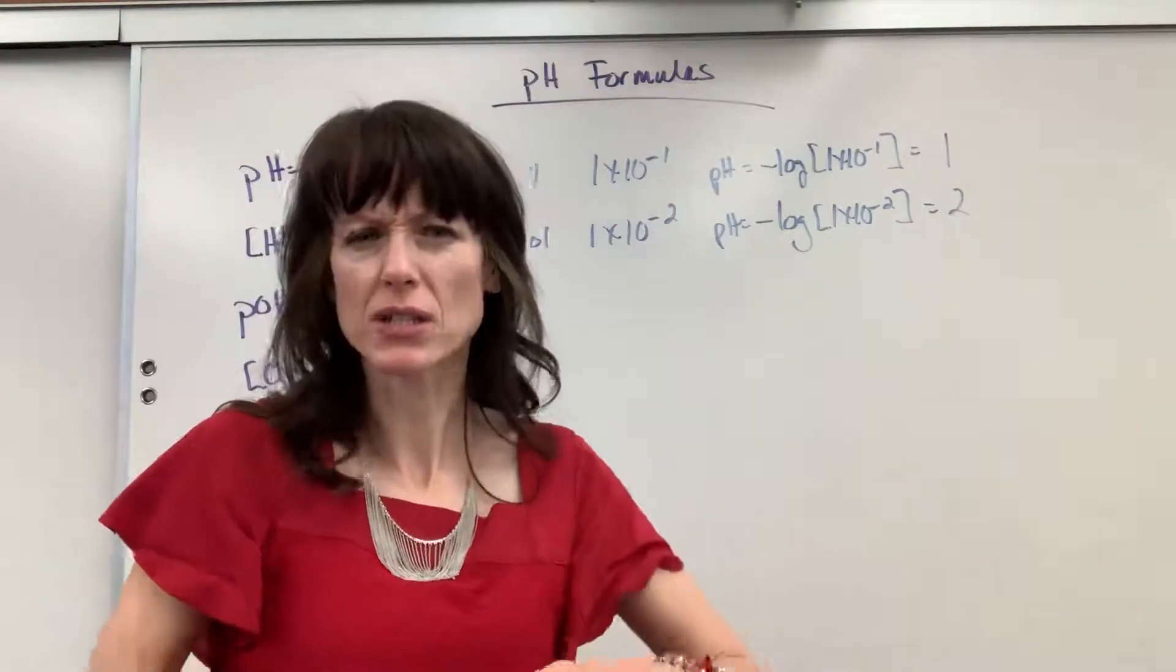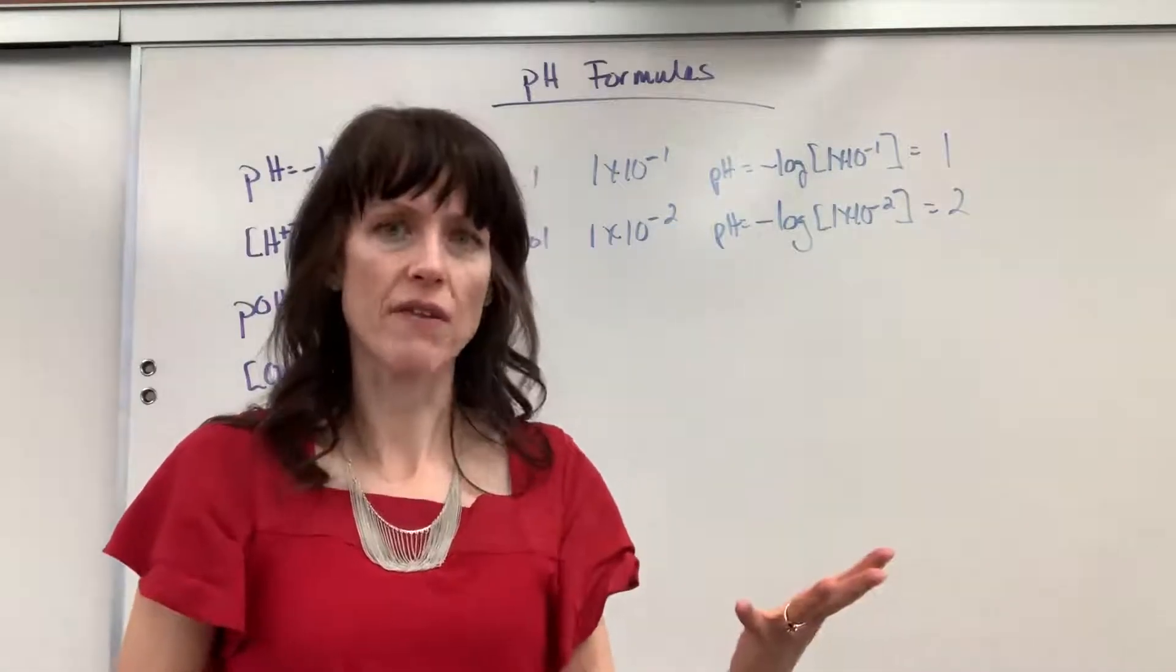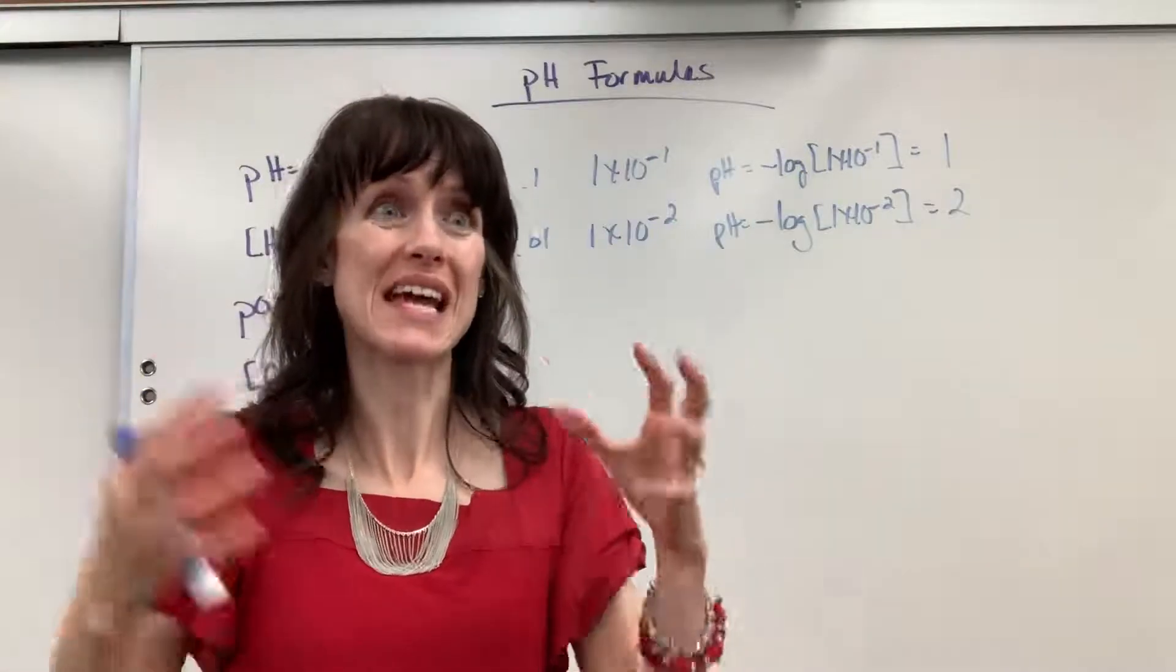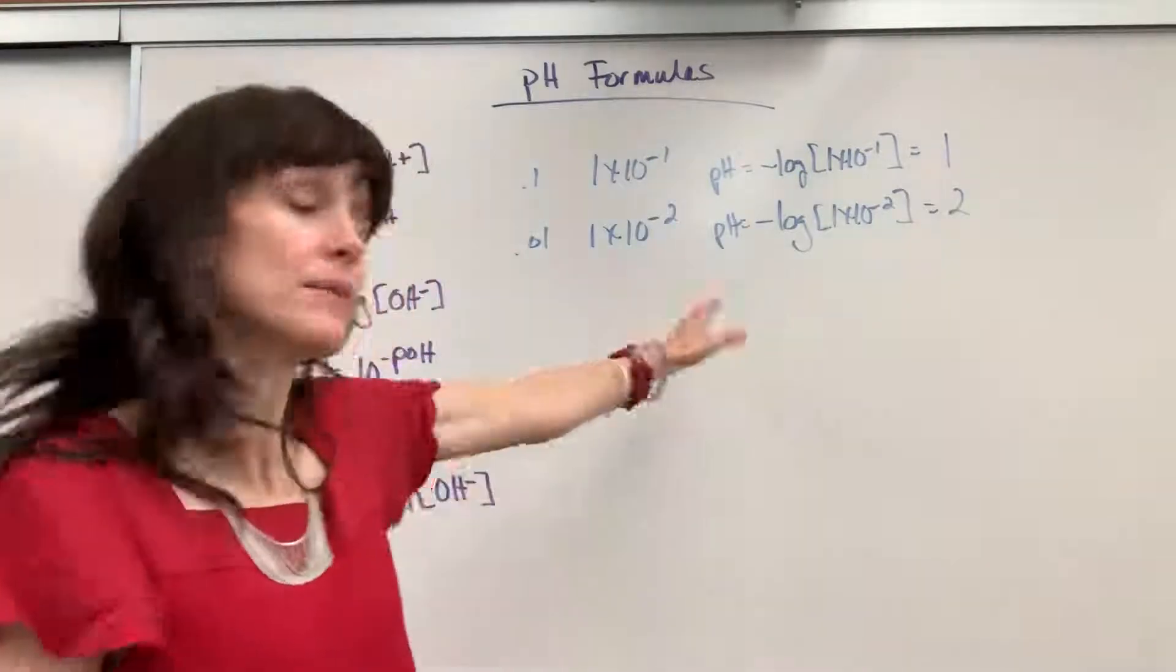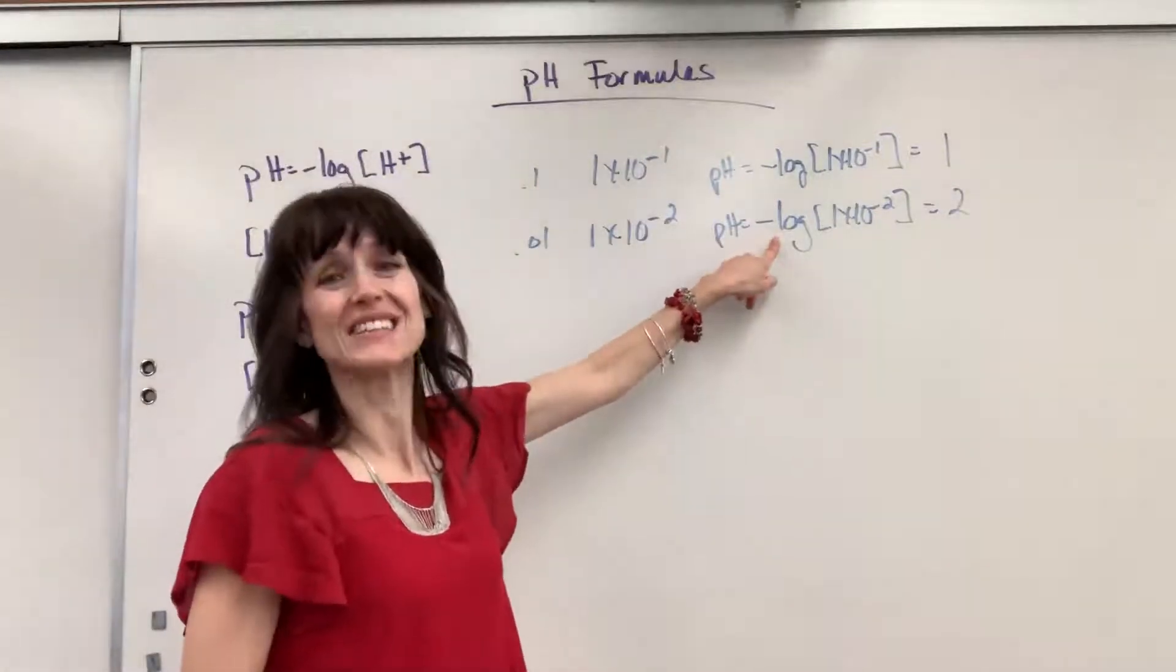It's like the seismic Richter scale for earthquakes. An earthquake of 6.5 compared to an earthquake of 7.5, that 7.5 earthquake is 10 times stronger. Same thing with the pH scale. Because of that, right there, it's logarithmic.